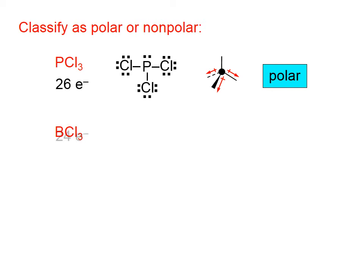Boron trichloride has 24 electrons. We reviewed in an earlier lesson that any boron trihalides, the boron is going to have six electrons around it. It's one of the violations of the octet rule. And so the electron domain geometry and the molecular geometry will both be trigonal planar.